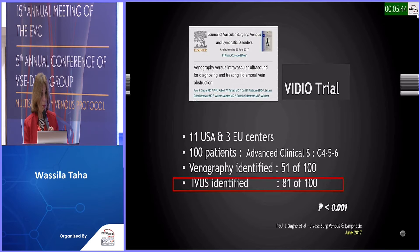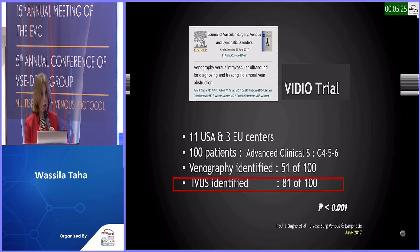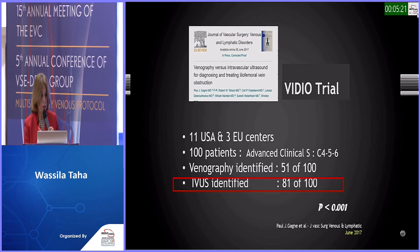The VIDIO trial, with Paul Gagne as principal investigator, was conducted in 11 centers in the USA and 3 centers in Europe, enrolling 100 patients. Venography succeeded in identifying the lesion in only 51 out of 100 patients, while IVUS succeeded in identifying each one out of 100 patients — a statistically significant difference. I would like to share two cases with different scenarios: one non-thrombotic and the other with thrombotic occlusive disease.